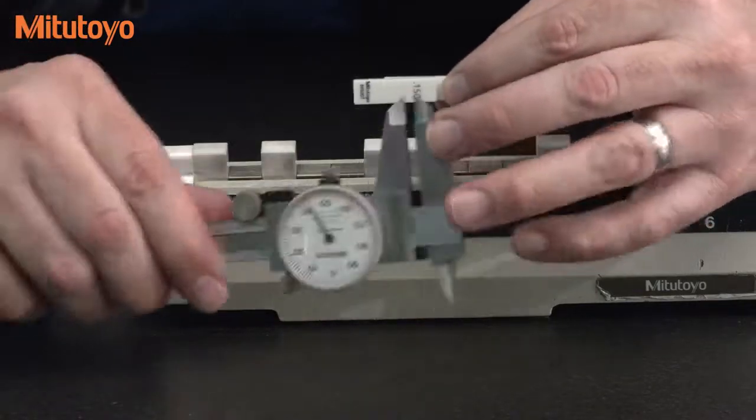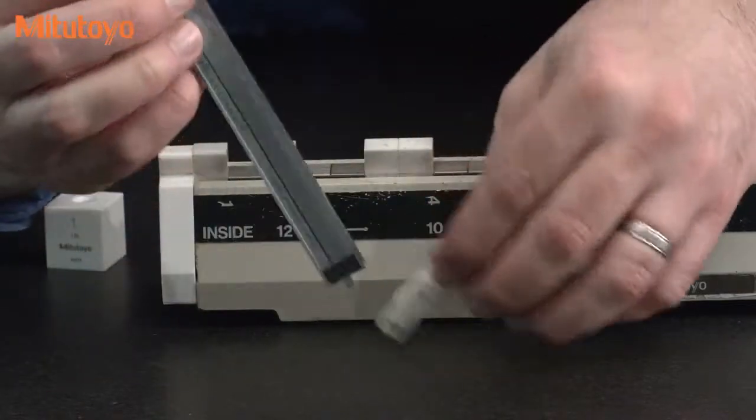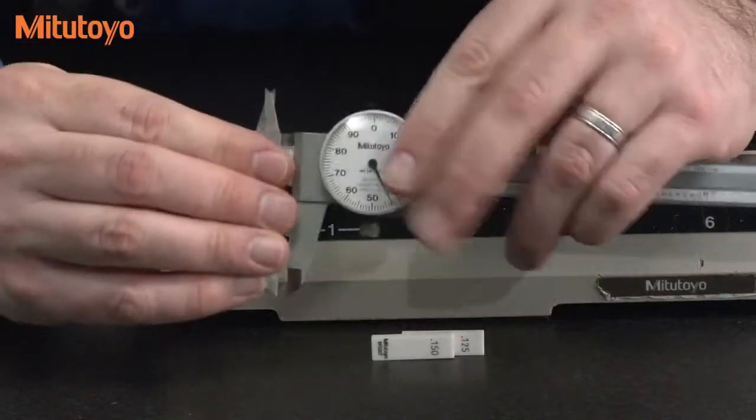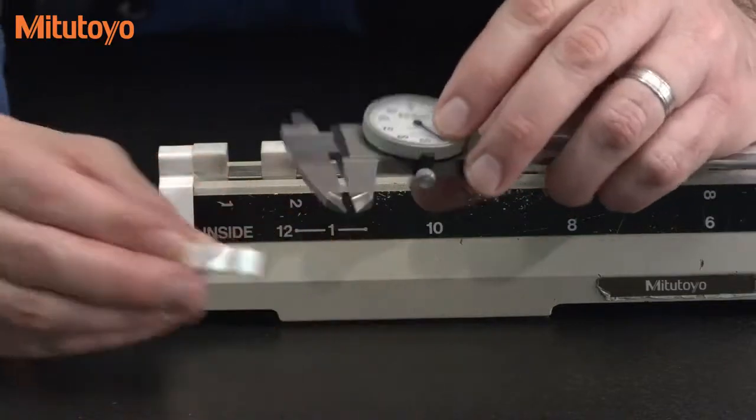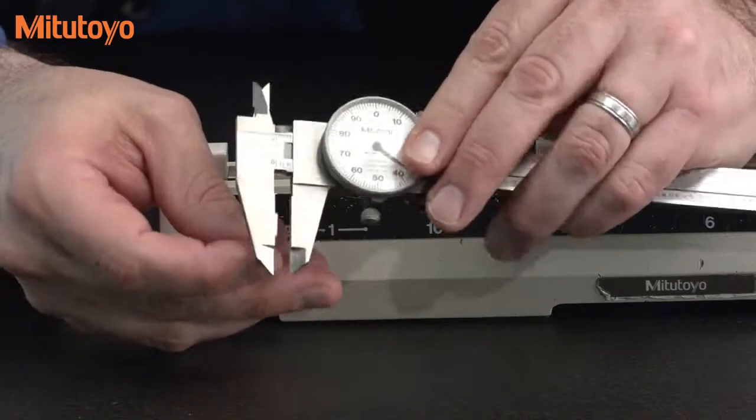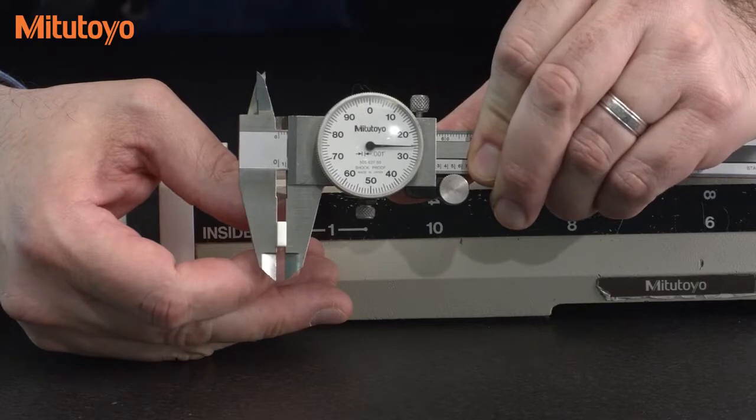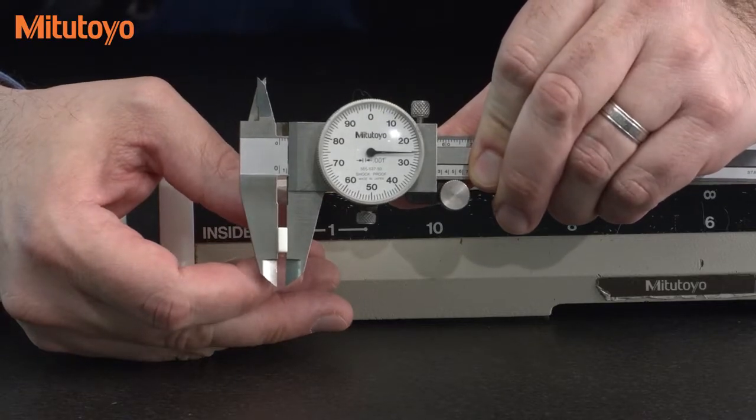For this style caliper, this inch size caliper, with the .125 block if I was to measure that, I should be at the 3 o'clock position like you see here.